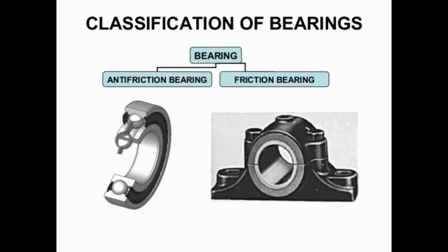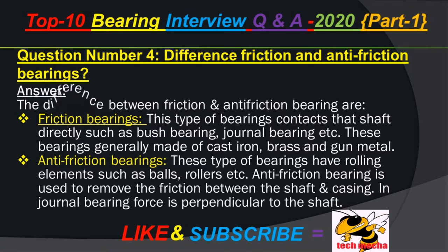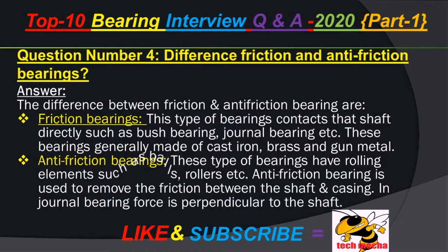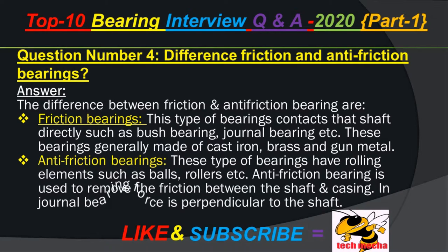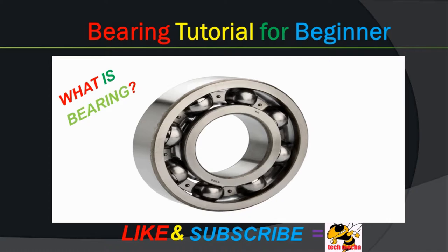Question number 4: Difference between friction and anti-friction bearings. Answer: Friction bearings are bearings that contact the shaft directly, such as bush bearings and journal bearings. These bearings are generally made of cast iron, brass, and gun metal. Anti-friction bearings have rolling elements such as balls and rollers. Anti-friction bearings are used to remove friction between the shaft and casing. In journal bearings, force is perpendicular to the shaft.